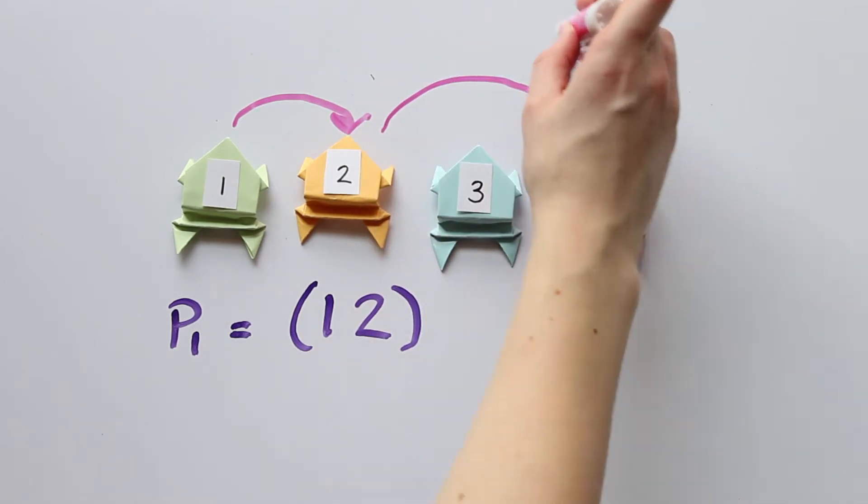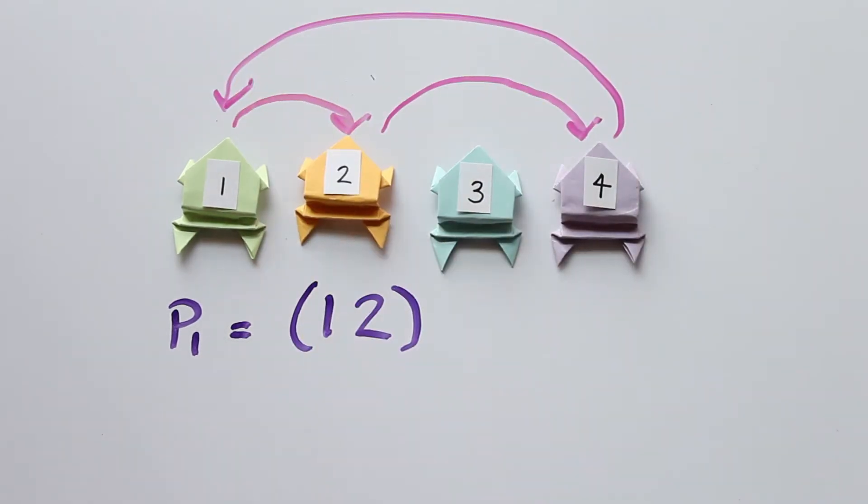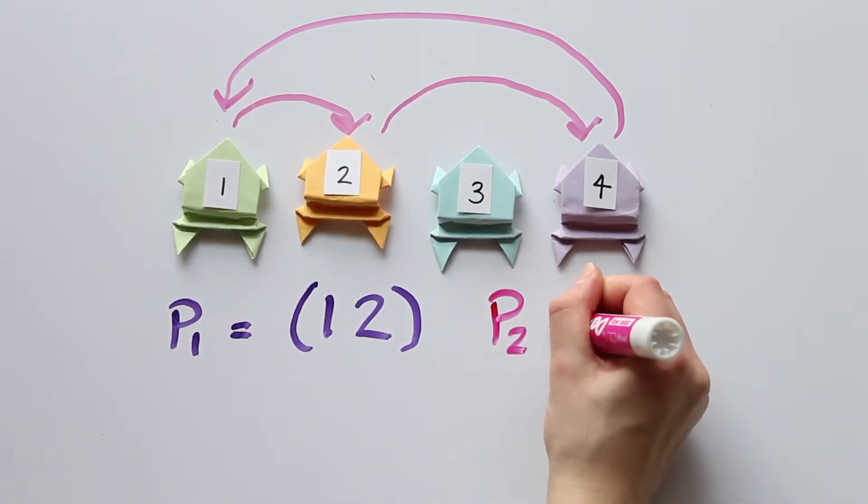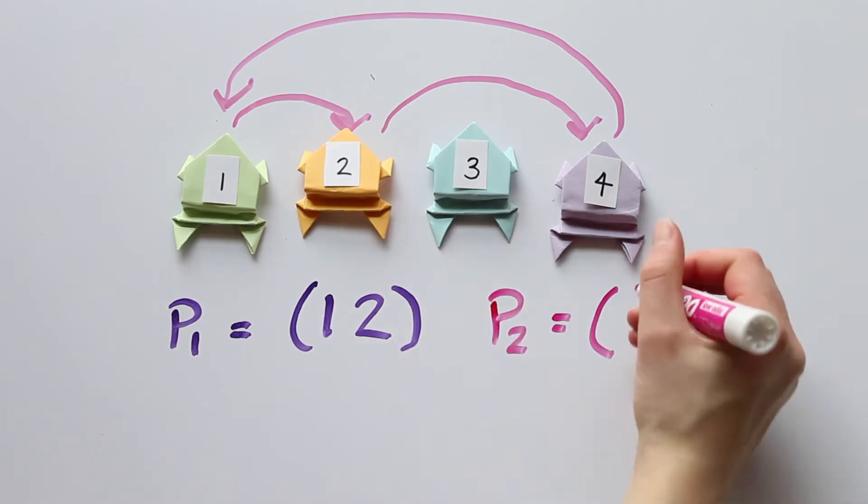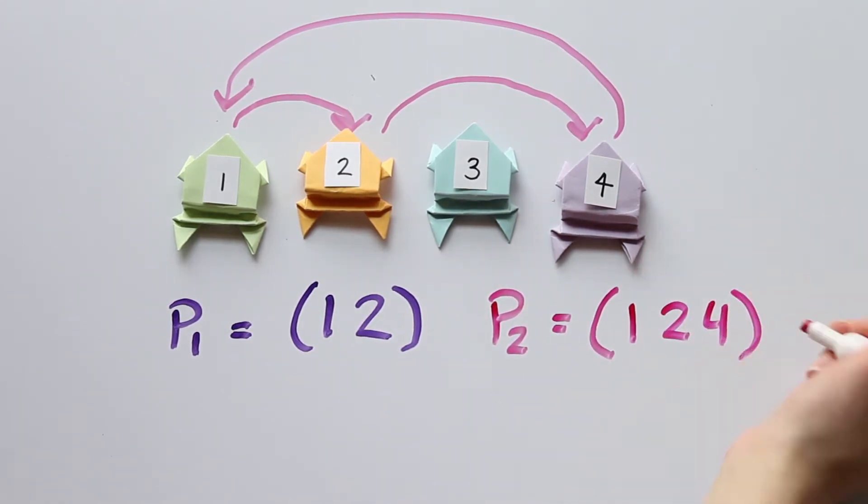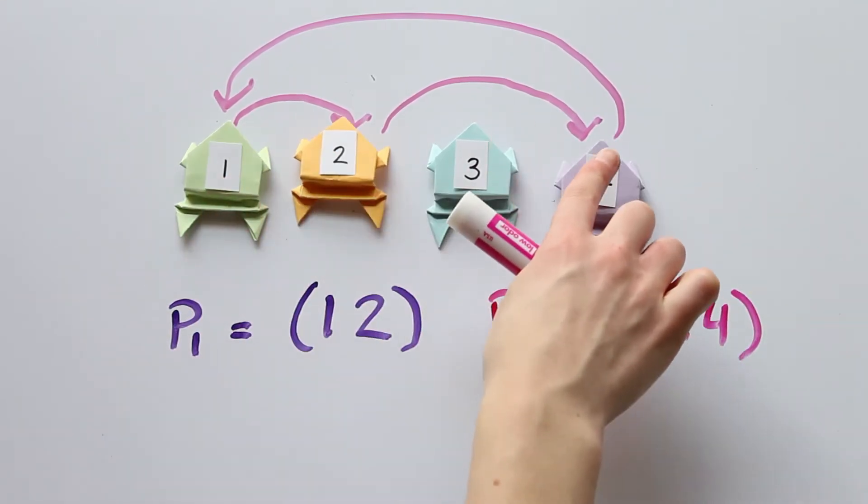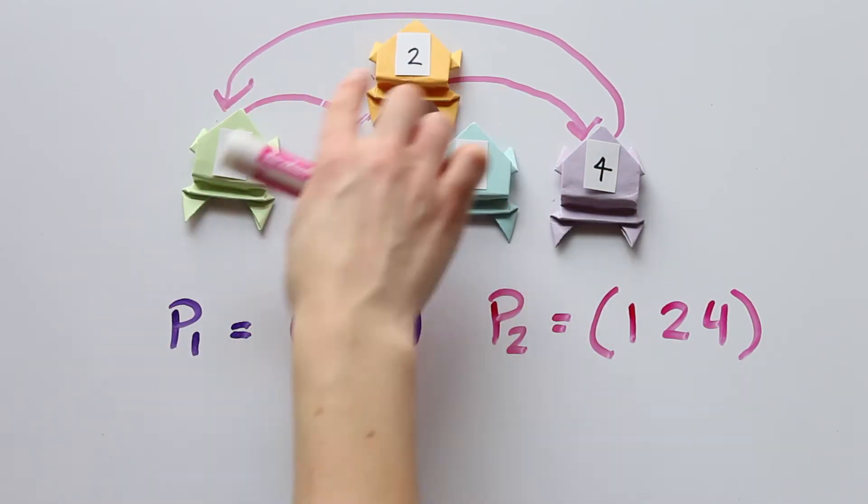Now, what if we move around 1, 2, and 4 in this way? Then we don't need to give any information on frog 3 because he stays in the same place. We can write 1, 2, 4 this time. 1 goes to 2, 2 goes to 4, and 4 goes back to 1.